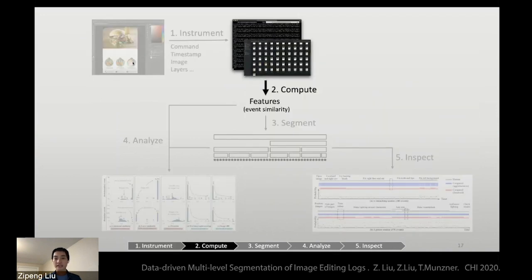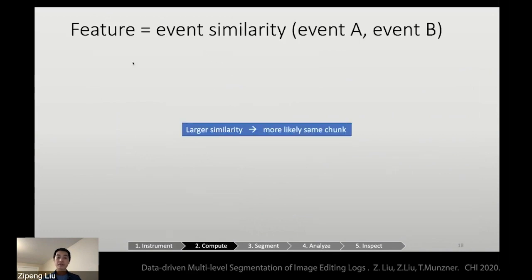After we collect this raw data, we compute the events into features. So by feature, I actually mean event similarity between two events. So the intuition being that if two events have larger similarity, it's more likely for them to be in the same chunk.